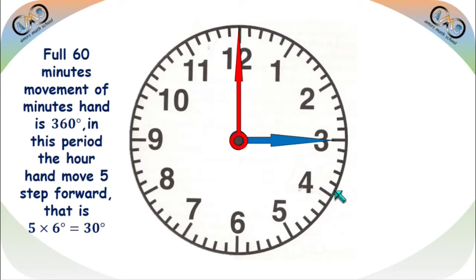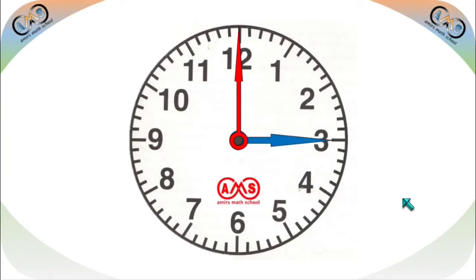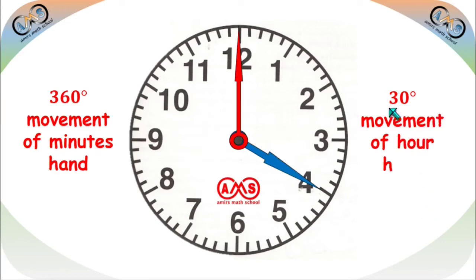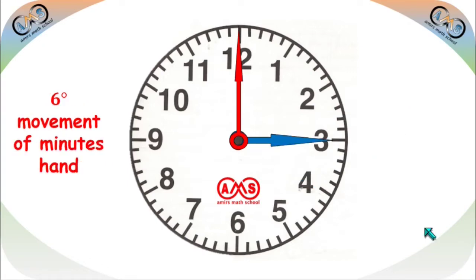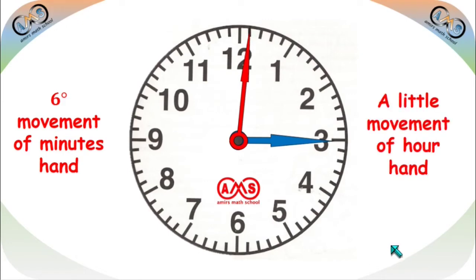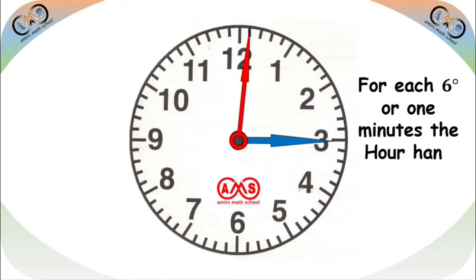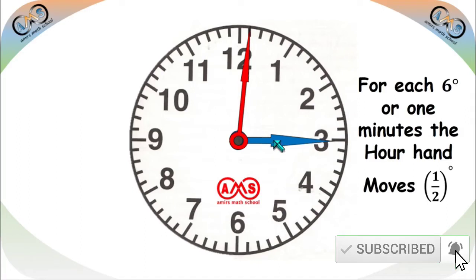When the minute hand moves the full 60 minutes, the hour hand moves just one hour — five steps ahead, 30 degrees. So 360 degrees movement of the minute hand equals just 30 degrees movement of the hour hand. This relation is very important when finding the angle. For each 6 degrees or one minute, the hour hand moves just half a degree ahead. So for each 6-degree movement of the minute hand, the hour hand moves half a degree forward.